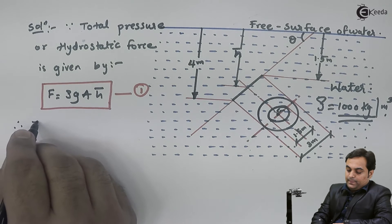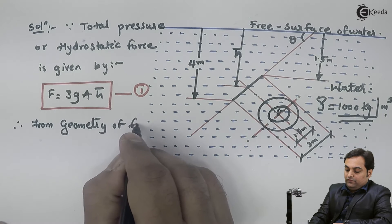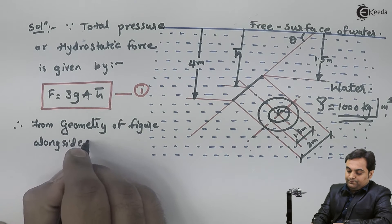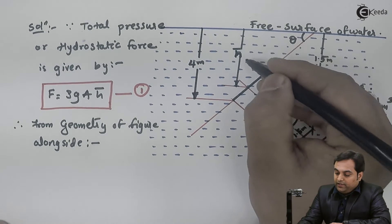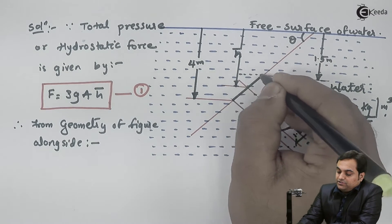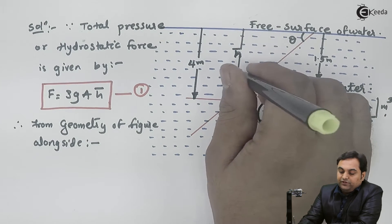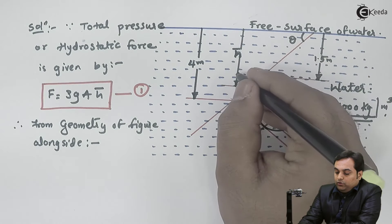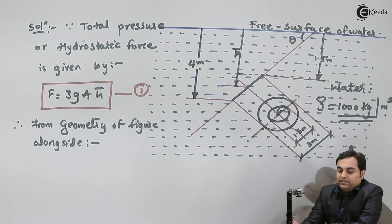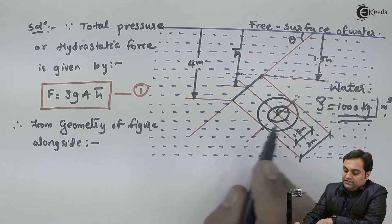From the geometry of the figure, I want to calculate H bar. Looking at the diagram, the 1.5 meter distance from the free surface down to the top edge is already known. If I can calculate the additional distance from that dotted line down to the centroid, H bar will be known. For that purpose we need to calculate theta from the geometry.